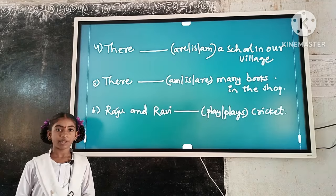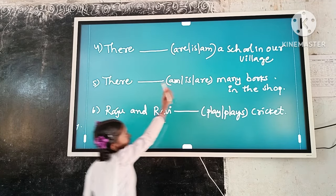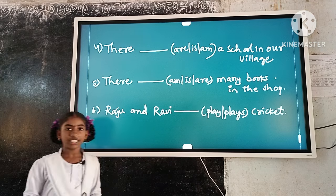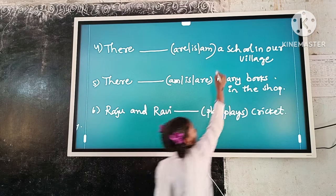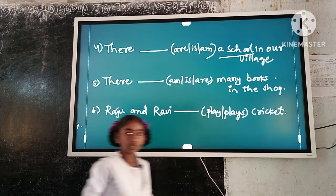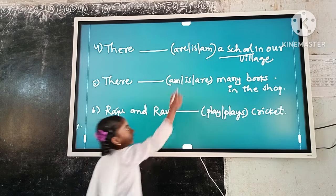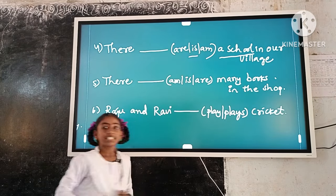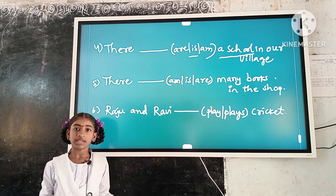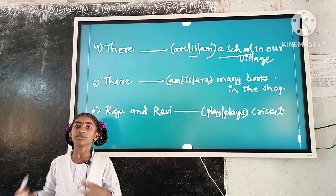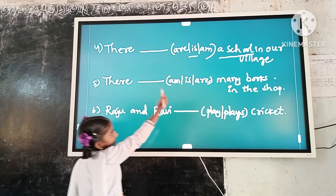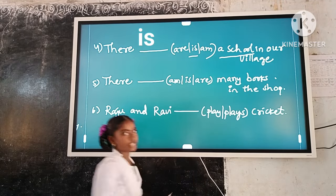Example number 4: There dash a school in our village. Here, the subject is singular. 'Is' is a singular verb form. So, singular subject and singular verb form agree. The answer is: There is a school in our village.